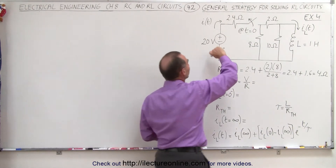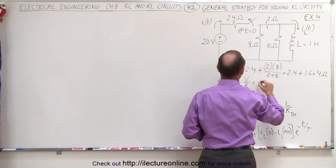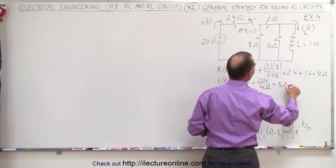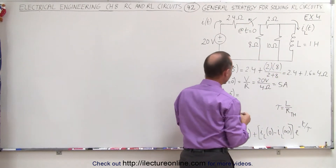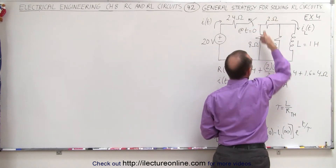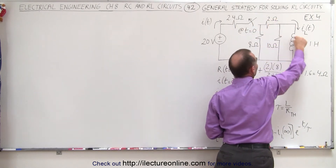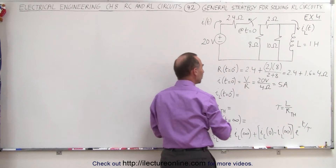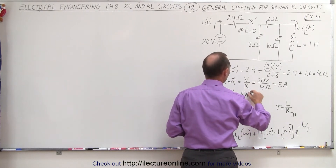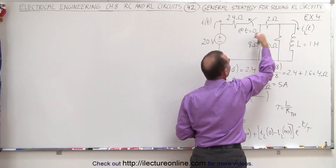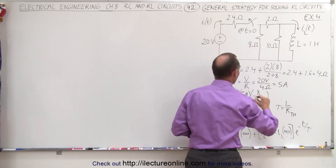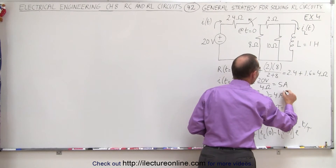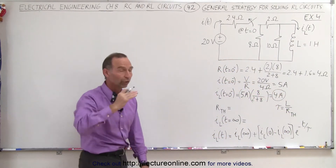Prior to opening the switch, the current through the circuit is the voltage applied, 20 volts, divided by the resistance of 4 ohms, which is 5 amps. That current splits between the two branches, and whatever goes through the 2 ohm resistor also goes through the inductor. The current through the inductor before the switch opens equals 5 amps times the ratio of the other branch resistance: 8 divided by (2 plus 8) = 8/10 = 4/5, giving 4 amps through the inductor.